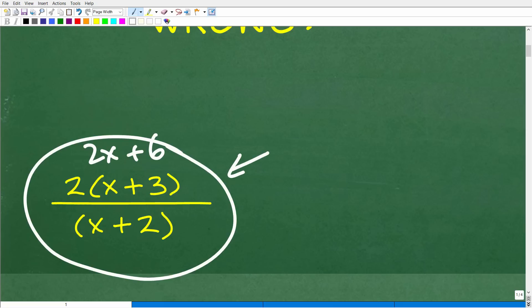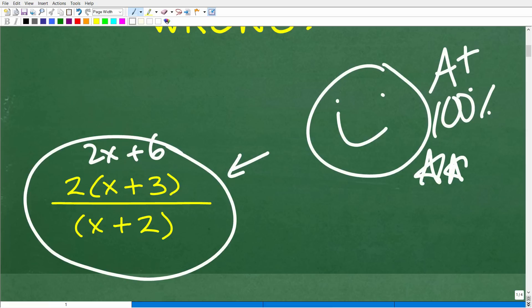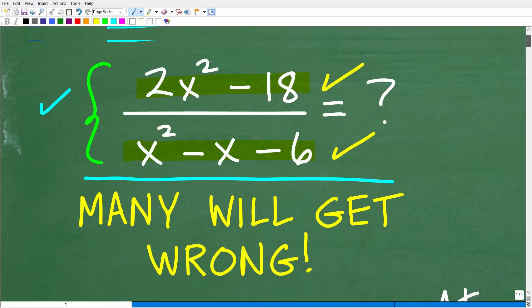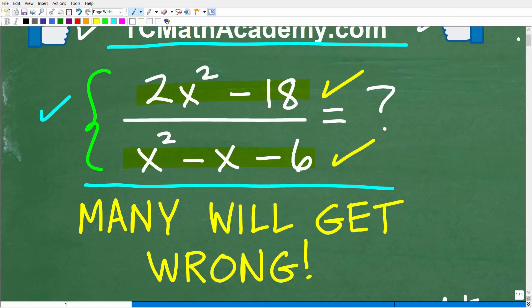But this is the answer. And if you got this right, we have to celebrate by giving you a nice little happy face and a plus a 100% and multiple stars. So you can tell your friends and family that, indeed, you are a certified professional expert in simplifying rational expressions by factoring and cross-canceling like factors.